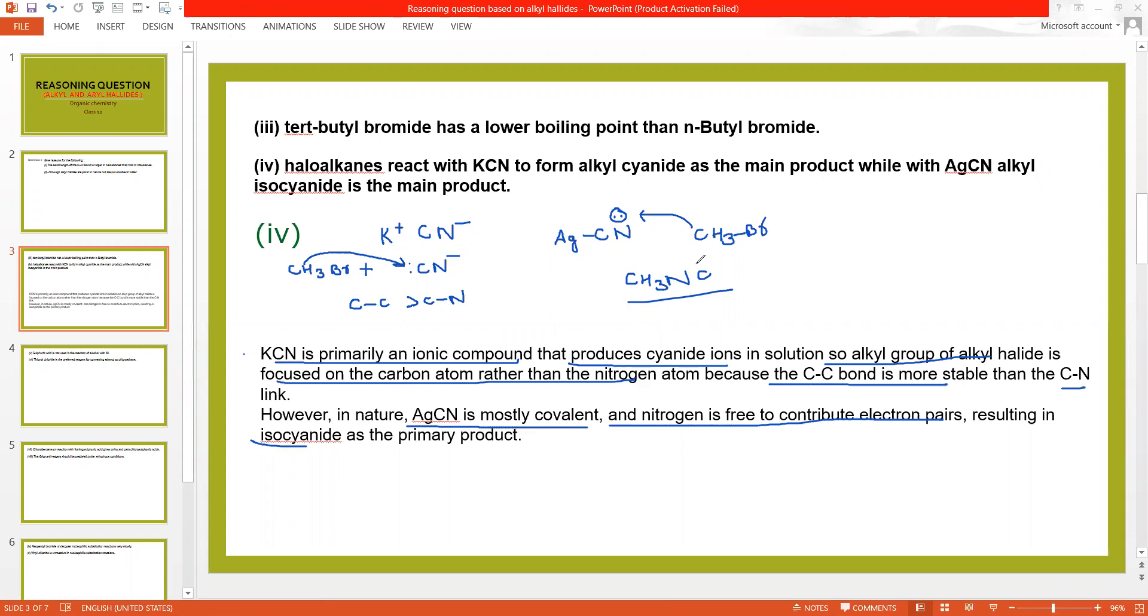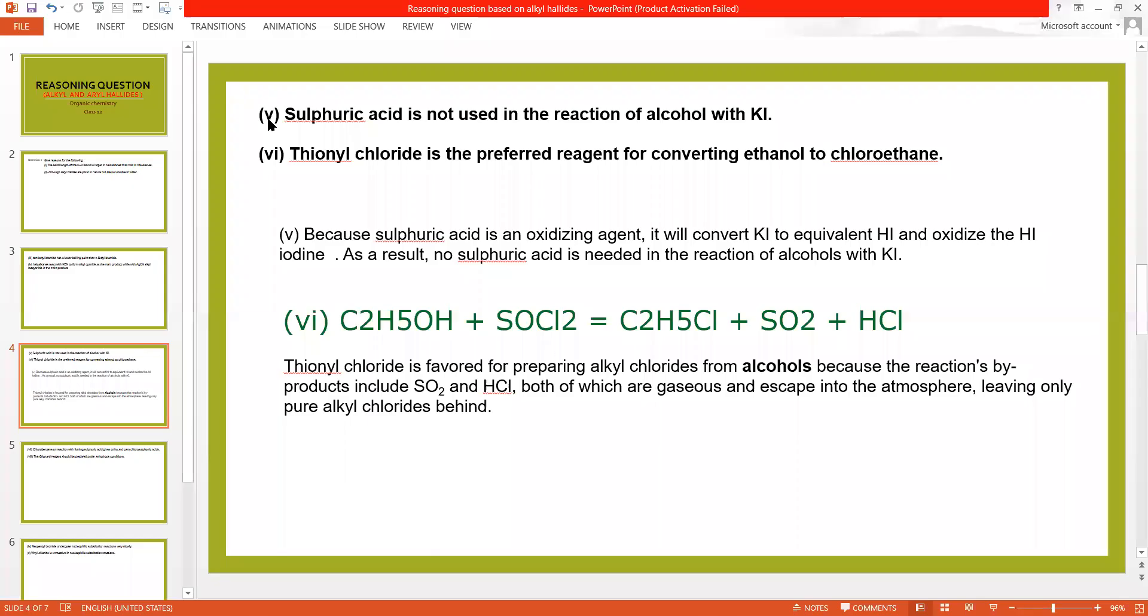Understood these four reasons? Now come to next one. Reason number five, sulfuric acid is not used in reaction of alcohol with KI. If KI and sulfuric acid mix, then sulfuric acid is an oxidizing agent. It oxidizes HI to I2. And this is the reason that no sulfuric acid is used in reaction of alcohol with KI.